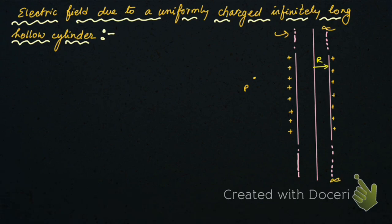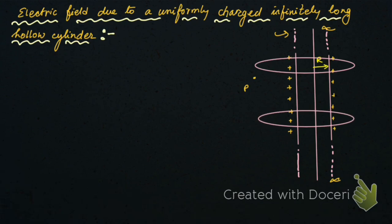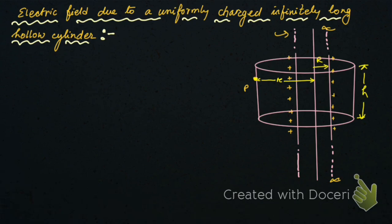In order to do that, let me draw a Gaussian surface through this point P — a cylindrical Gaussian surface. It is at a distance of small r from the axis of the hollow cylinder, and h is the height of the Gaussian surface. The electric field due to this positively charged hollow cylinder will be radially outward in this direction.